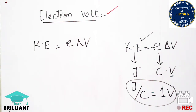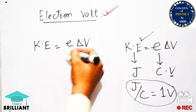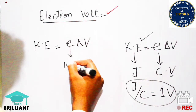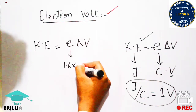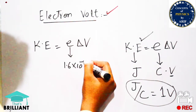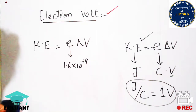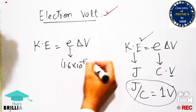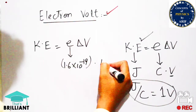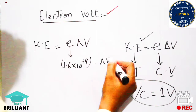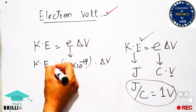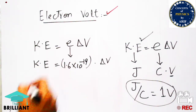The value of e is the well-known charge of an electron, which is 1.6 into 10 to the minus 19 coulomb. We place this value into the kinetic energy expression to evaluate the electron volt.